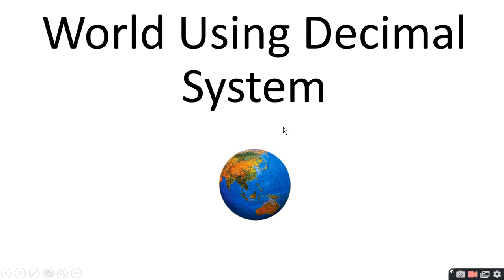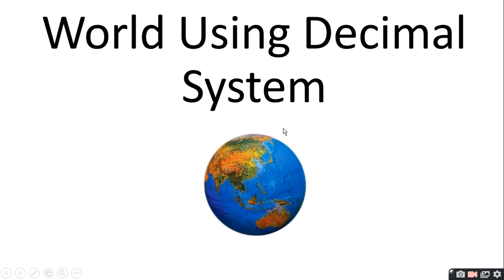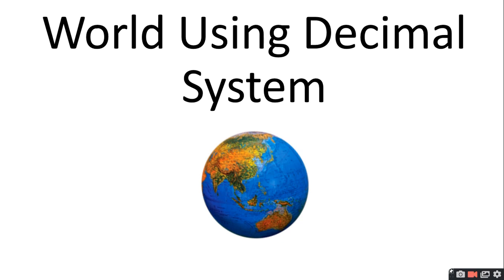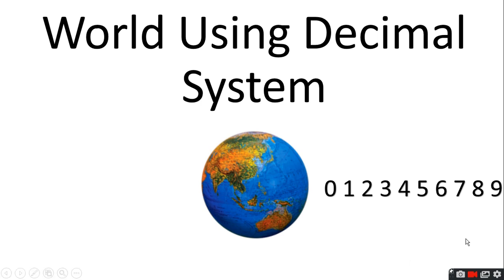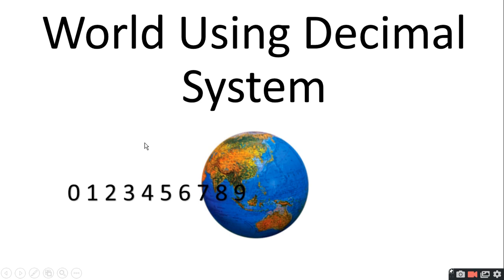We use the decimal system. Decimal means deci means 10, and decimal numbers are made from digits 0 through 9. From the combination of these 9 digits, you can make any number. That is why the entire world follows these 9 digits and follows the decimal system.